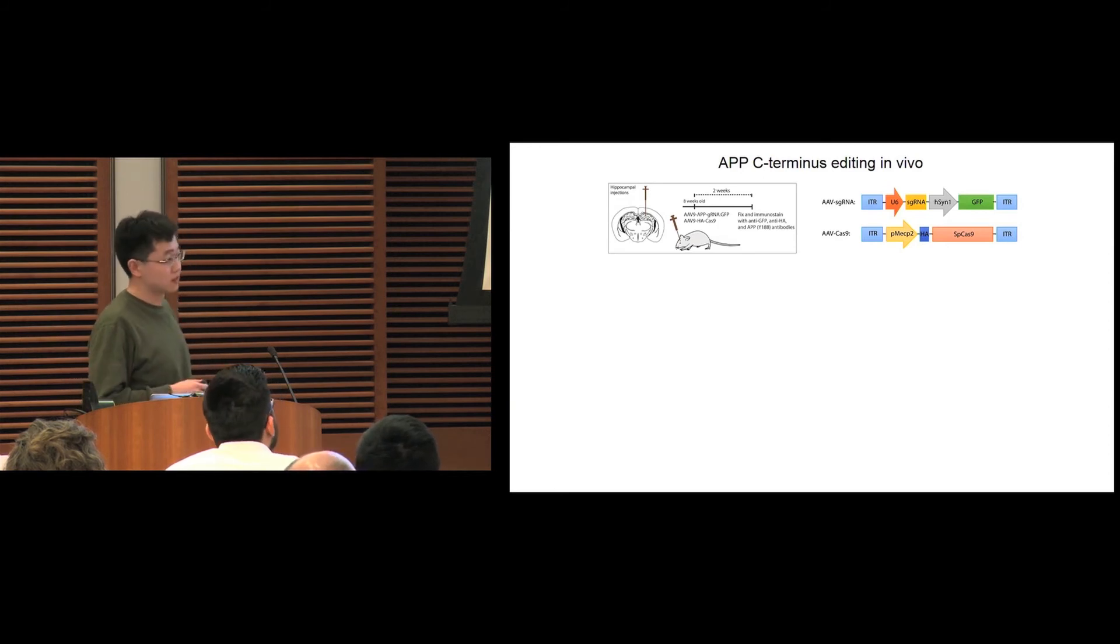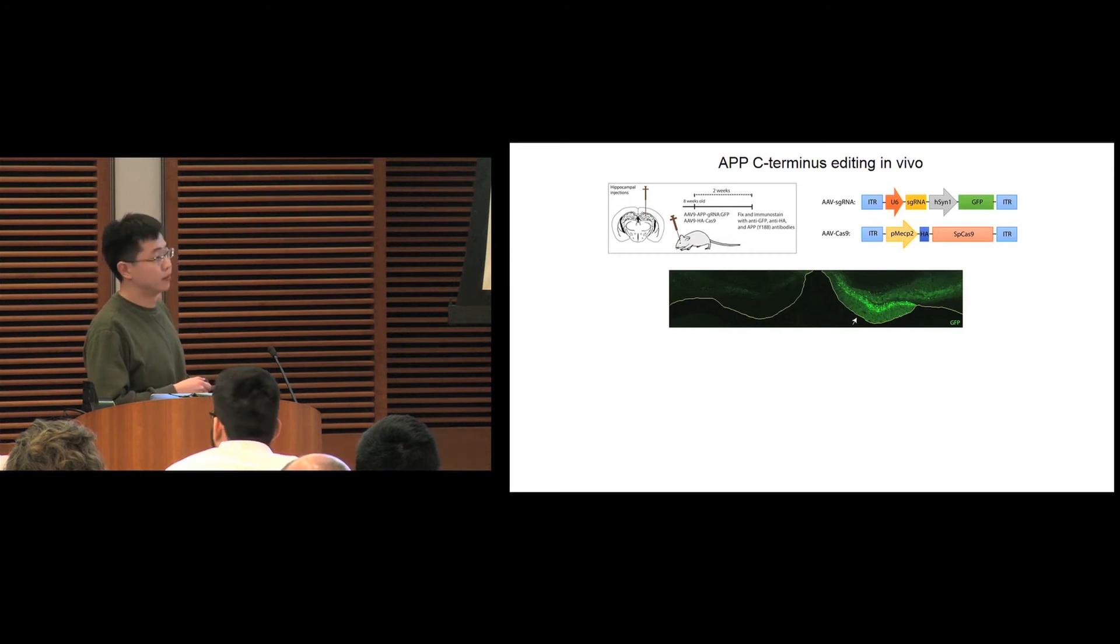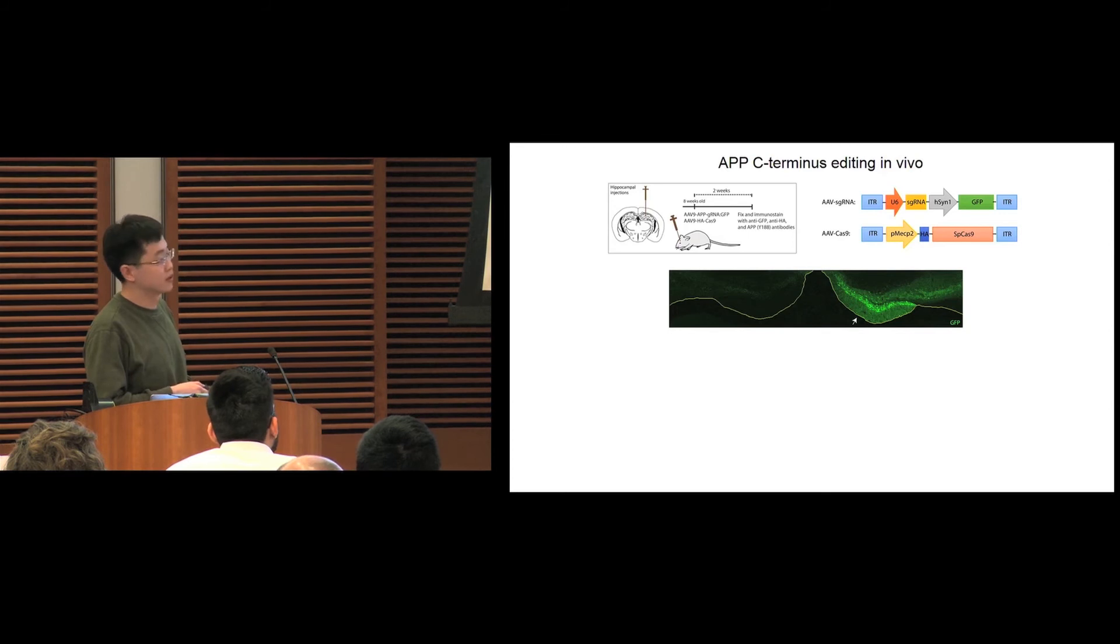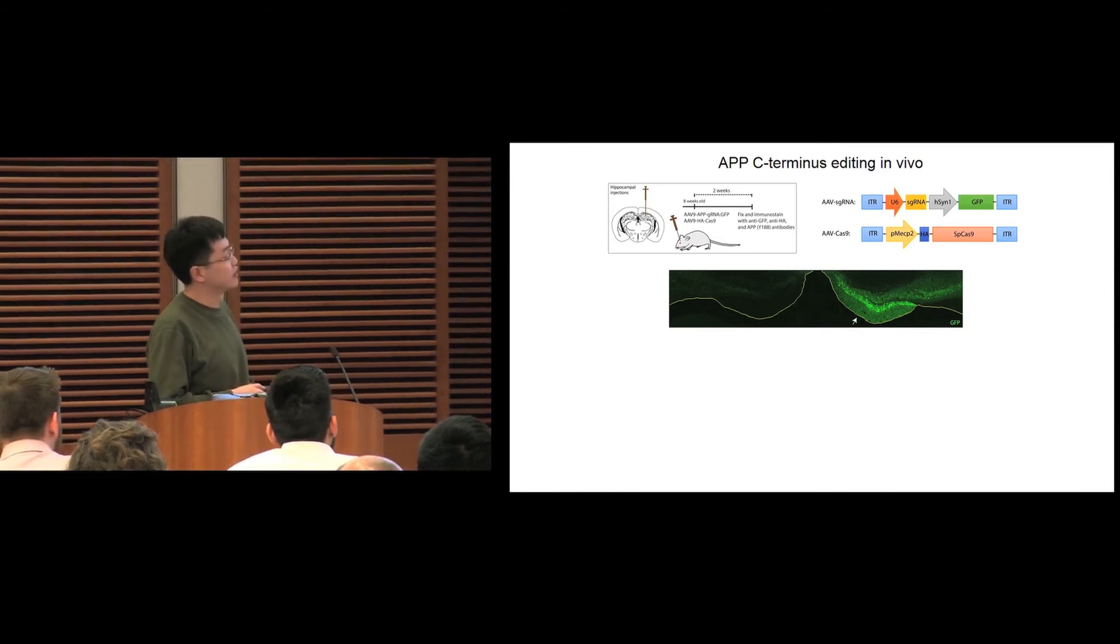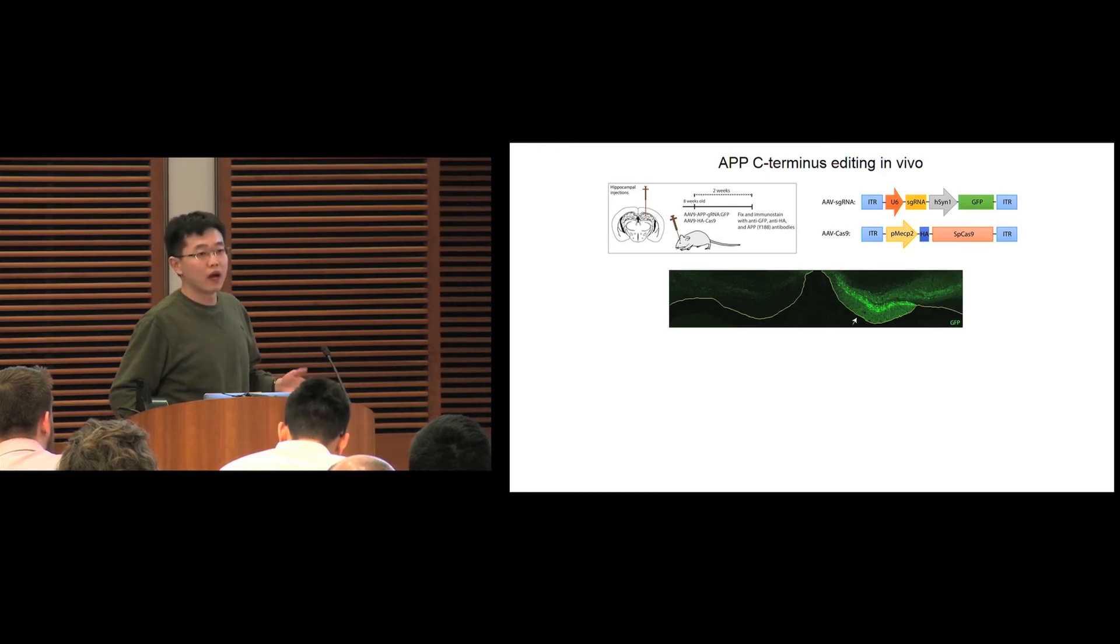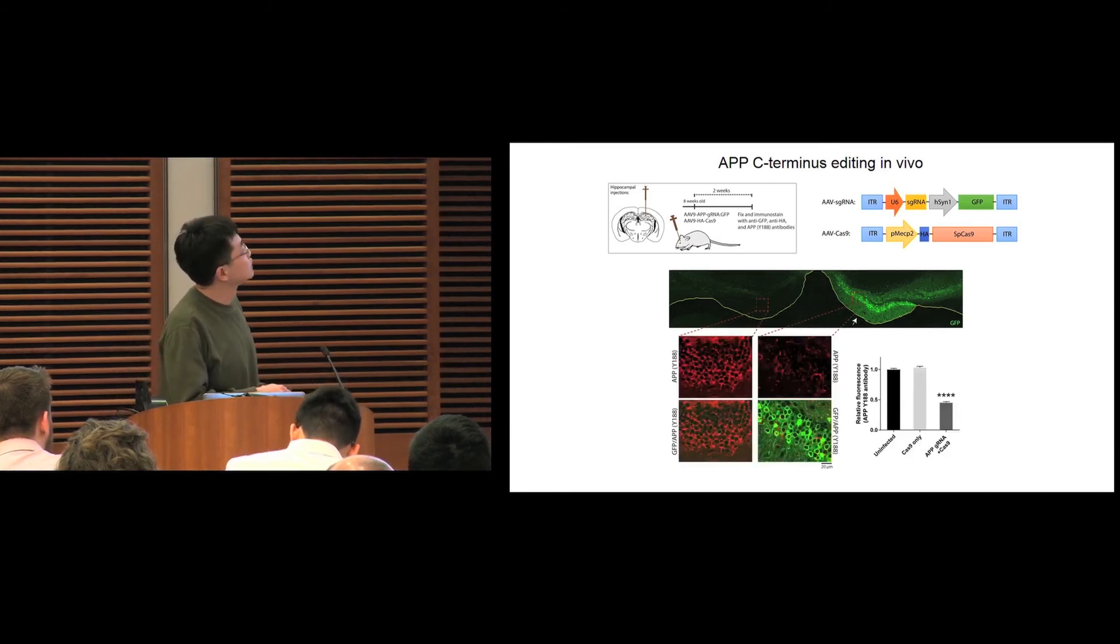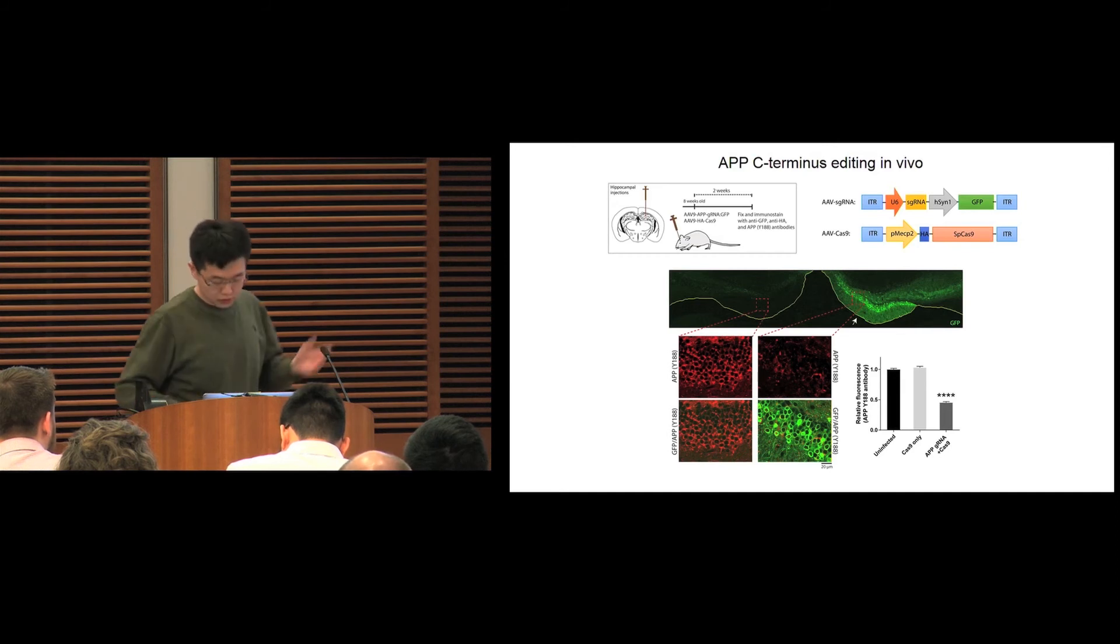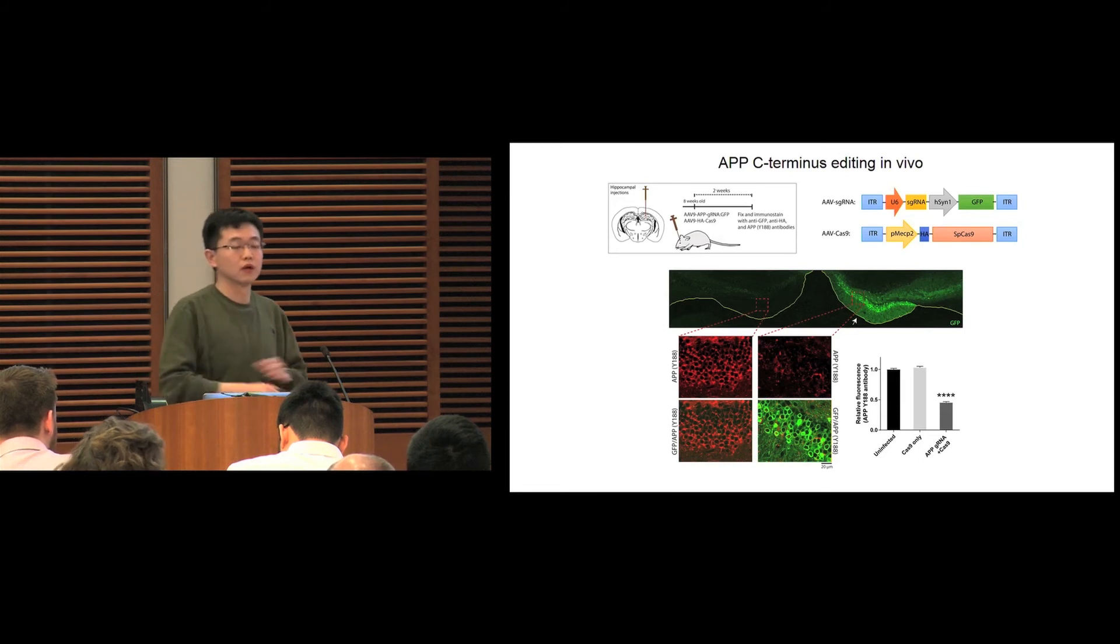Here is the example. The left half of the brain is not infected by the viruses, while the right half is infected, as shown by GFP expression. We stained the brain with Y188 antibody. We found that with CRISPR expression, the Y188 staining is reduced compared to control neurons. So from here, we know that APP CRISPR can work in cells and in neurons to cut off the C-terminus.